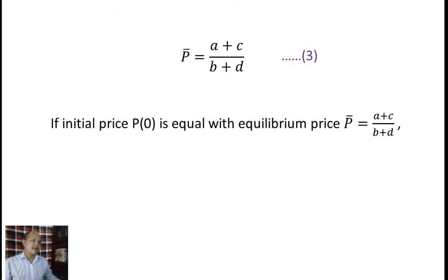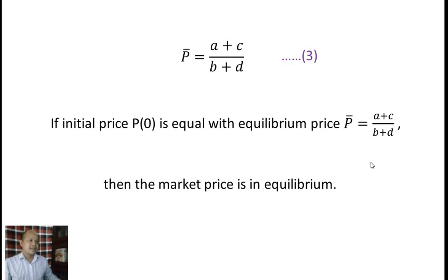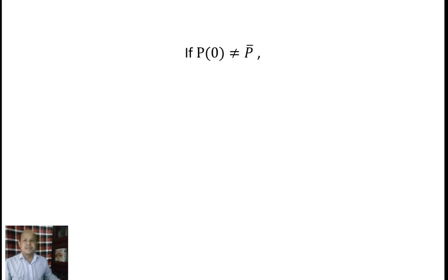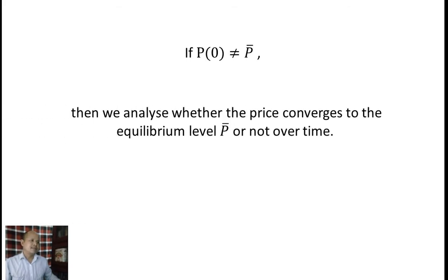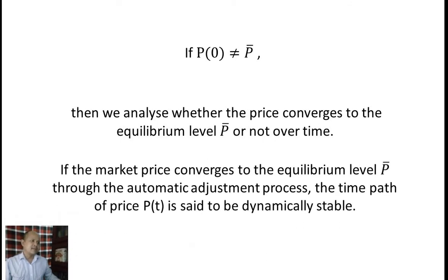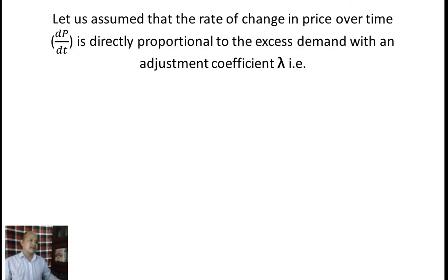If initial price p0 equals equilibrium price p-bar equal to (a plus c) divided by (b plus d), then the market price is in equilibrium. But if initial price p0 is not equal to equilibrium price p-bar, then we analyze whether the price converges to the equilibrium level p-bar or not over time. If the market price converges to the equilibrium level through the automatic adjustment process, then the time path of price pt is said to be dynamically stable.